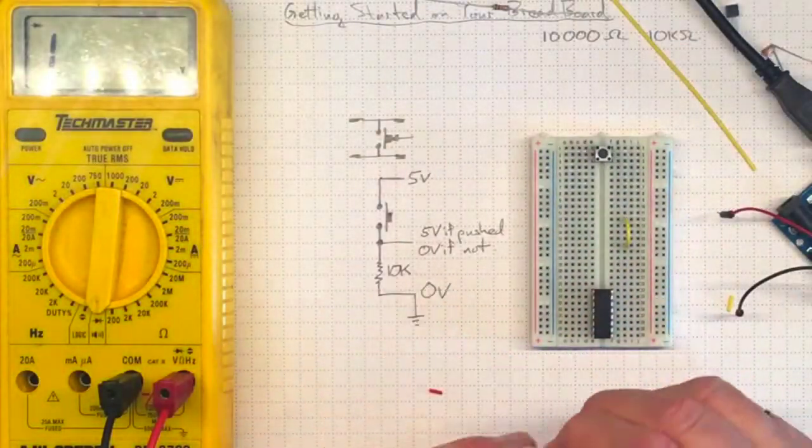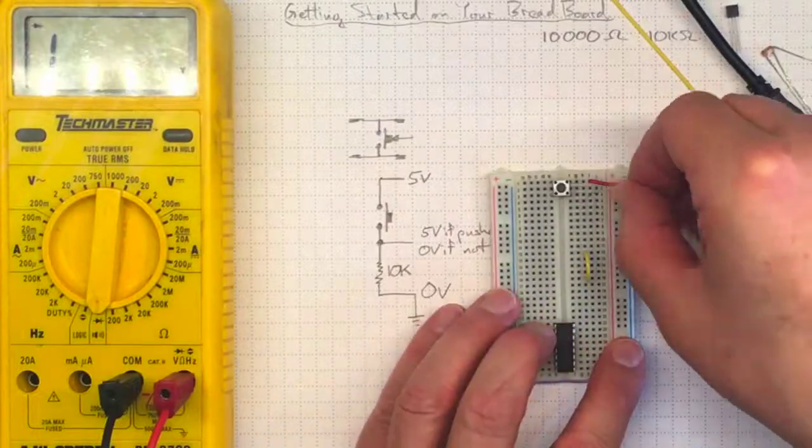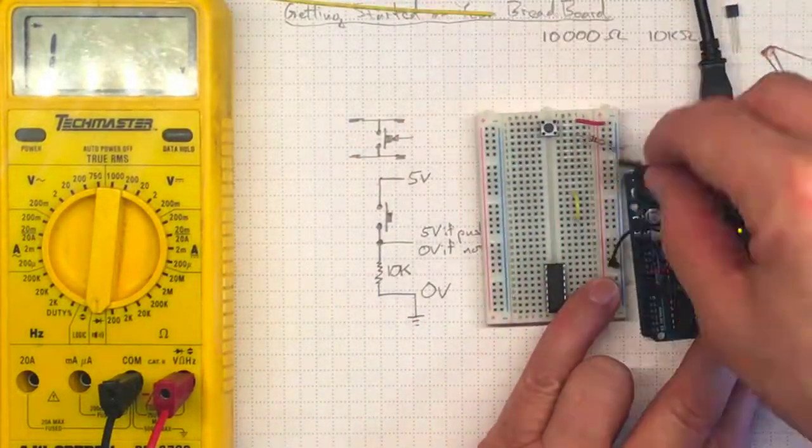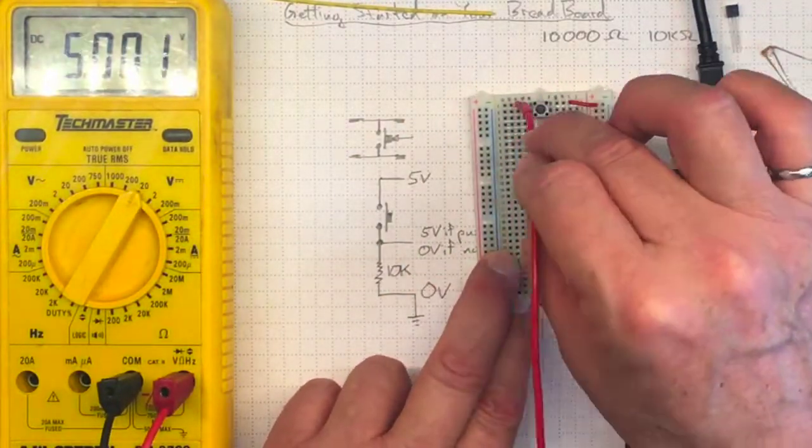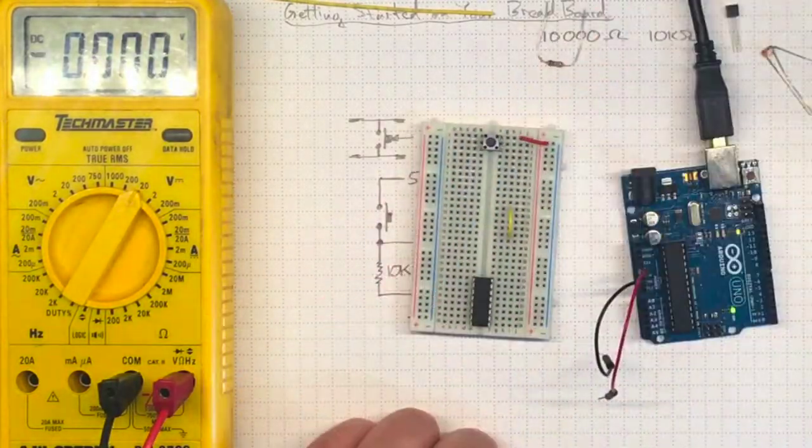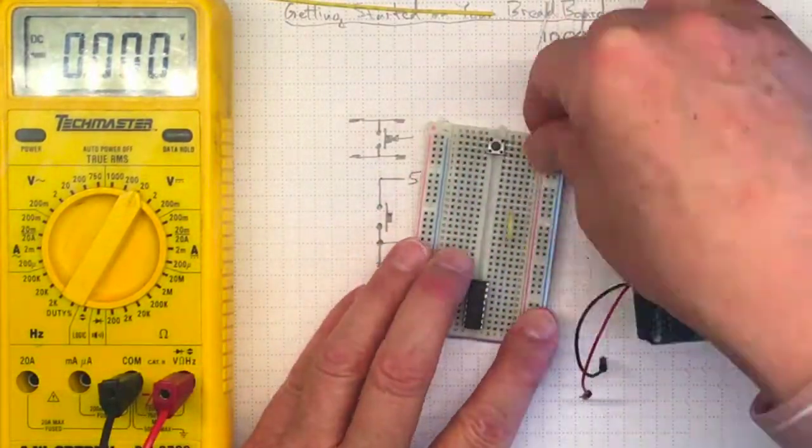So now I'm going to duplicate that schematic over here on the breadboard. It won't be quite the same shape but it'll have the same electrical connections. Then I'll make it a little more compact to use the least amount of real estate on the board.